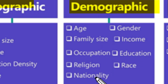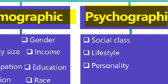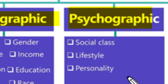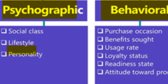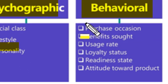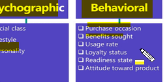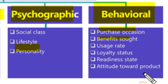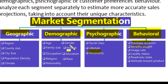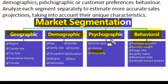We can find out sales potential in different segments and get an idea for future sales estimation. The market can also be segmented in terms of psychographic divisions such as social classes, lifestyles, or the personality of target customers. We can also segment market from a behavioral point of view — finding out occasions for typical purchases, the benefits sought by customers, usage rate for a target product or services, loyalty status of customers, readiness state of customers, and customer attitude towards the product. A sales estimator has to analyze each of these segments separately to estimate more accurate sales projections.